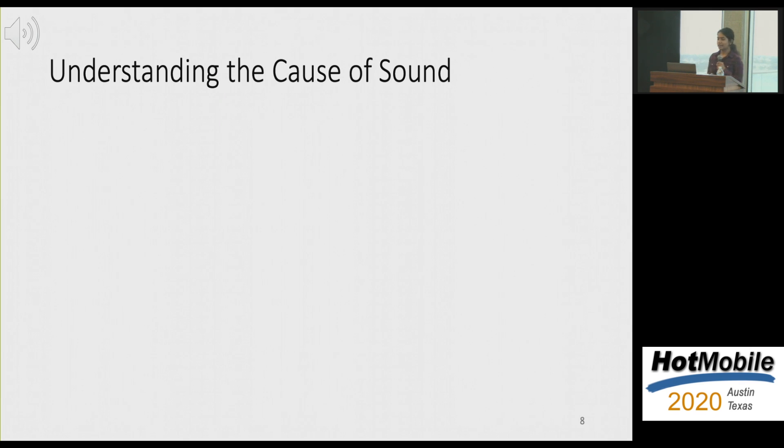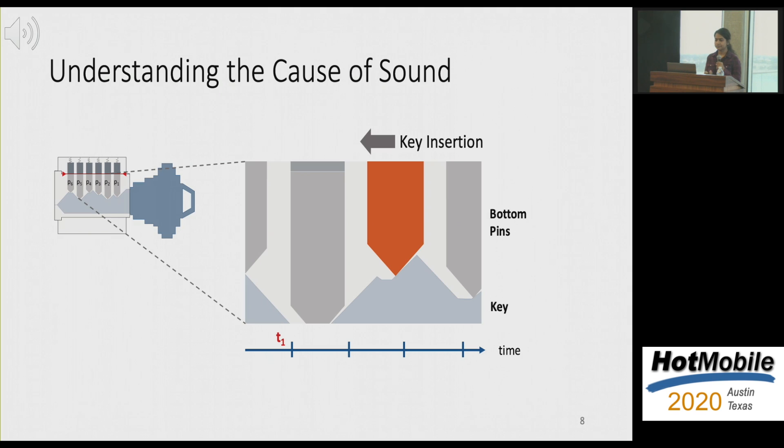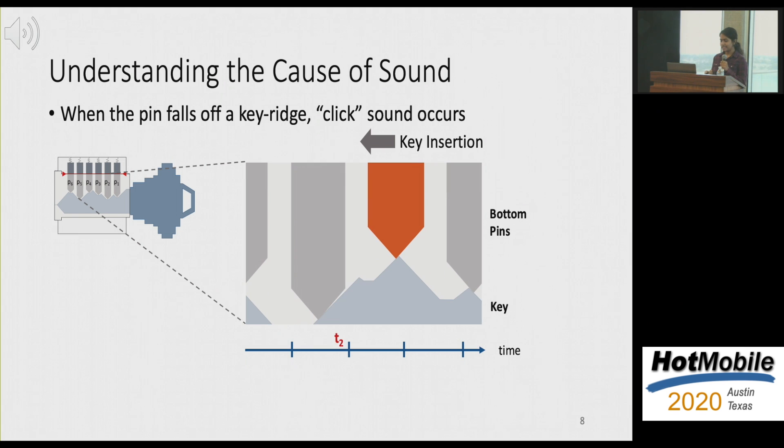So now that we understand the lock mechanism, I'll quickly talk to you about what exactly causes the sound as the key is being inserted. So if you look at a zoomed in view of the key, you can kind of see these pins as well as these ridges being very pointed. And because of that pointed nature, every time this pin falls off the ridge of the key, it produces a very sharp tone or a click sound. So maybe I can go through an animation where you can kind of visualize this. So as the key is being inserted, every time it falls off, you kind of hear a click sound. Okay. So I can play it again. So click and then falls.